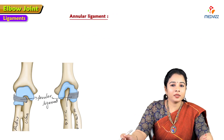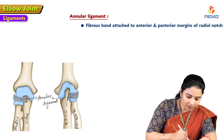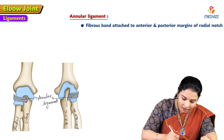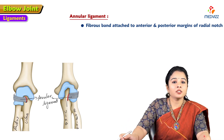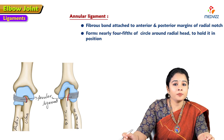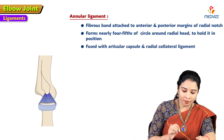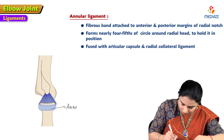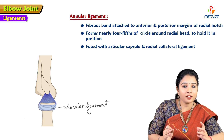The annular ligament is a fibrous band attached to the anterior and posterior margins of the radial notch of the ulna. It makes approximately four-fifths of a circle around the head of the radius to hold it in position. This ligament is fused with the articular capsule and the radial collateral ligament.